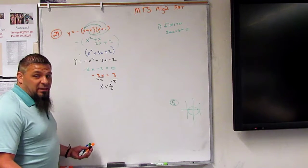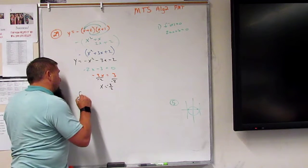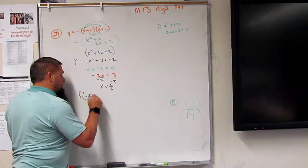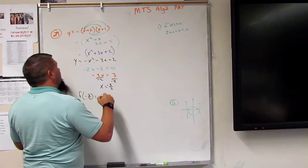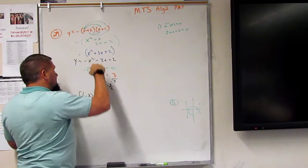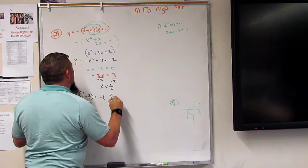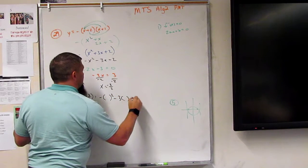All right, to find the vertex, I have to plug it in. So I have to find the f of the negative 3 over 2, which is equal to, now I can plug it into this one or this one. I like this one, so I'm just going to do that. Negative x squared minus 3x minus 2.